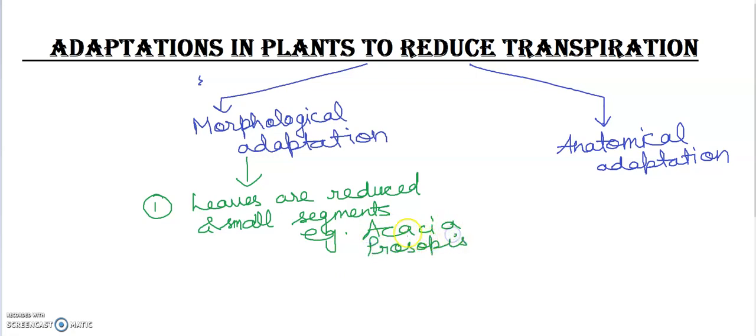Some more morphological adaptations - leaves are reduced into spines, development of spines. Example is opuntia cactus. Or into needle-like structures as in pine tree.